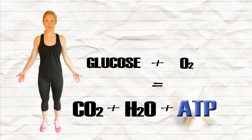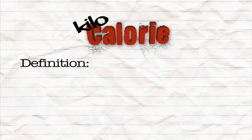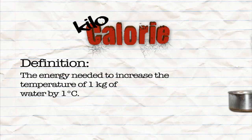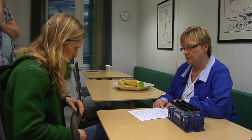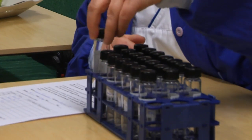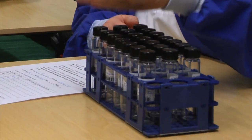We often hear the term calorie or kilocalorie when we talk about energy in food. A kilocalorie is actually a way to measure energy, and it's defined as the energy needed to increase the temperature of one kilogram of water by one degree Celsius. To understand the meaning of this kilocalorie term in relation to how our bodies work, we are going to do a little chemistry experiment.